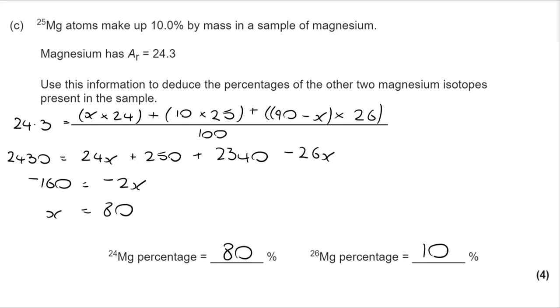If X is 80, and that's the percentage of magnesium 24, and we know it's 10% of magnesium 25, that leaves 10% of magnesium 26.